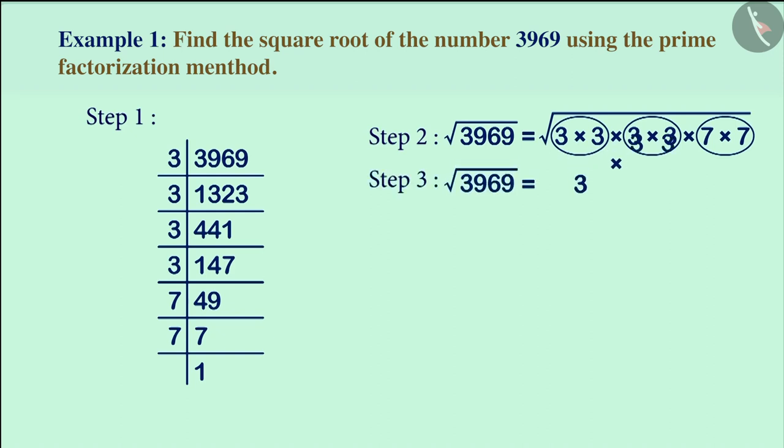Then, we will take one factor out of each pair and multiply them. This product is the square root of that number. That is, the number 63 is the square root of the number 3969.